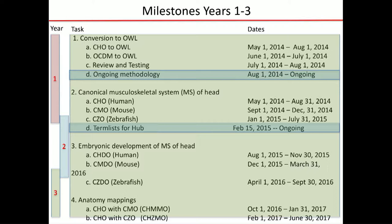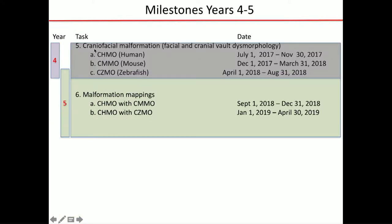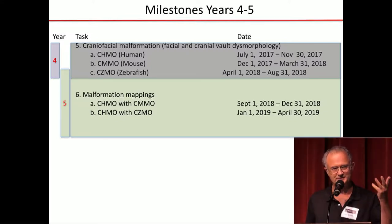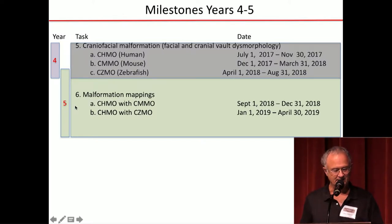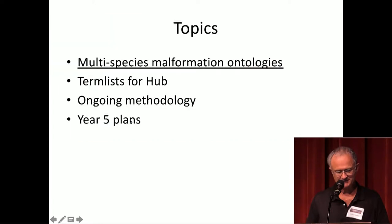We've developed normal anatomy, done embryonic development for the three species, and done mappings between the normal anatomy. This past year the primary content development activity has been craniofacial malformations for human, mouse, and zebrafish, which is relevant to what Dick Moss was just talking about. In the last year we'll also be doing mappings among these malformations.